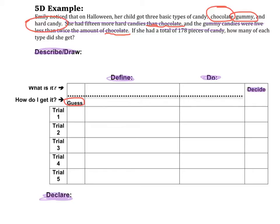The reasons are that chocolate showed up in the word problem more often than anything else, so that's probably a good idea to start with. Also, if I knew how much chocolate Emily's daughter had, I could figure out the other two — I could add 15 to get hard candies, and I could do five less than twice the amount of chocolate to get gummy candies. I'm going to put C for chocolate in my column. I've got two more things — gummy candy and hard candy — and in this define section I'm going to separate it into two more columns.